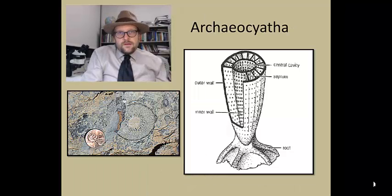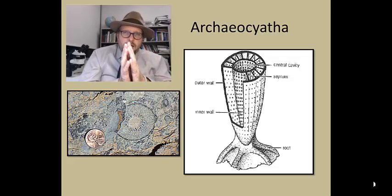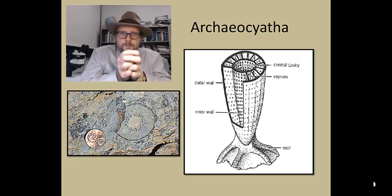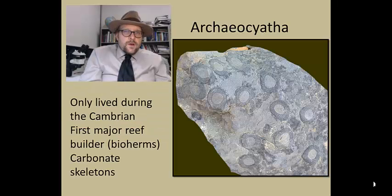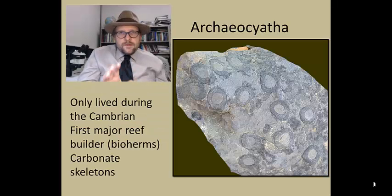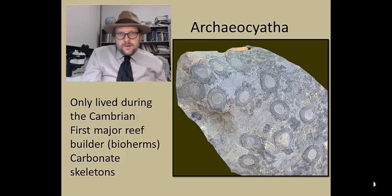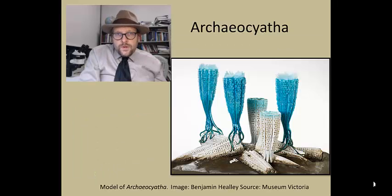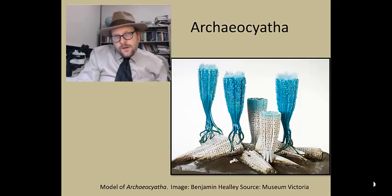The last group is the Archaeocyathida, which form structures out of carbonate that built reefs during the Cambrian. They are shaped like an inverted cone, with septa separating an outer wall and an inner wall. The base of the cone has holdfasts; they are often just a few centimeters in diameter. The Archaeocyathida are only found in the Cambrian, and they serve as the major reef builders, forming bioherms with their carbonate skeletons that would accumulate on the ocean floor. There is a cool reconstruction of Archaeocyathida at the Museum of Victoria in Australia, showing how they would grow on top of previous generations of colonies.